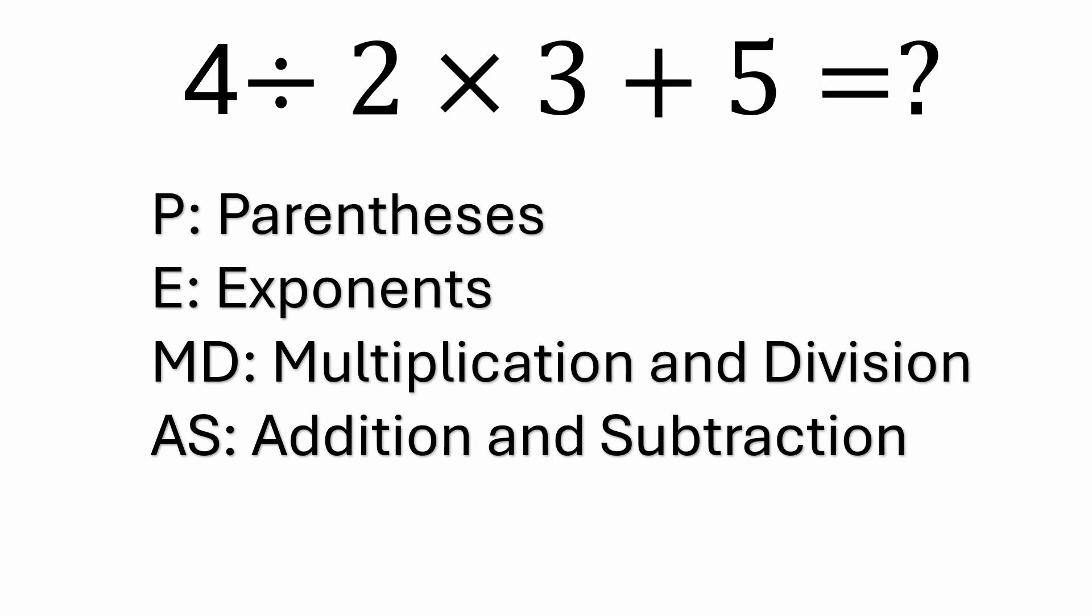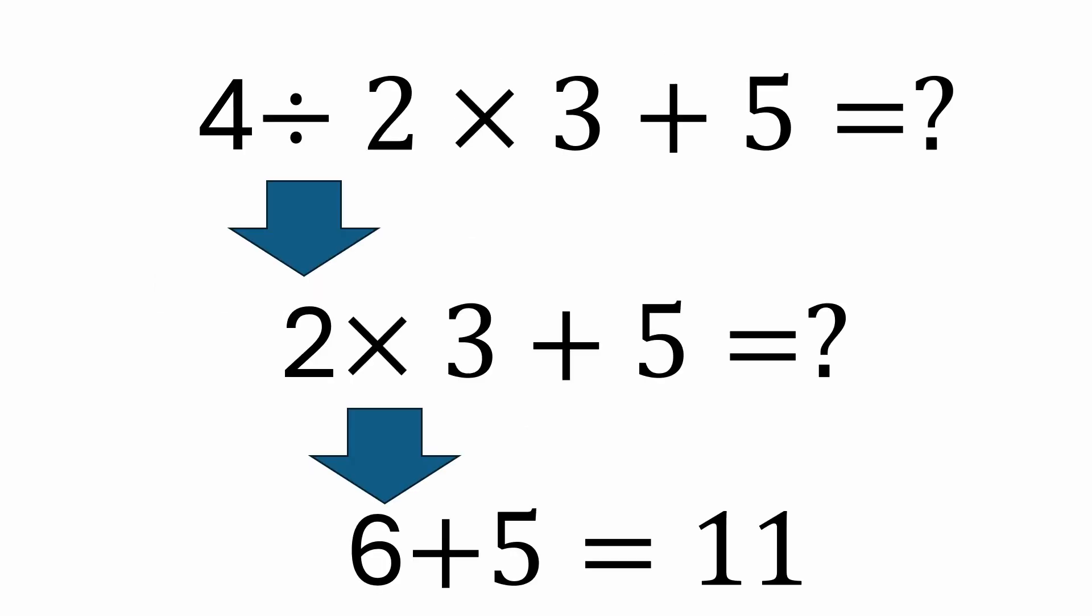So now in this problem we mentioned that we want to do the division first since we encounter it first going left to right. 4 divided by 2 is 2. Then the next step would be our multiplication, which would now be 2 times 3. Well that's pretty easy, 2 times 3 is 6. And then we move on to addition and subtraction. Well we do have addition, 6 plus 5. 6 plus 5 is 11.